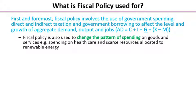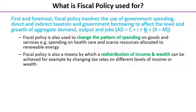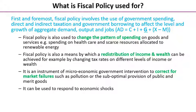We can also use fiscal policy to change the pattern of spending on goods and services — for example, governments might choose to spend more on healthcare. We can use it to redistribute income and wealth by changing tax rates on different levels of income, such as increasing the rate of income tax on high earners and increasing the generosity of benefits to low-income households. It's also used as an instrument of microeconomic intervention to correct for market failures, for example by putting excise duties on goods like cigarettes and alcohol which generate negative externalities.